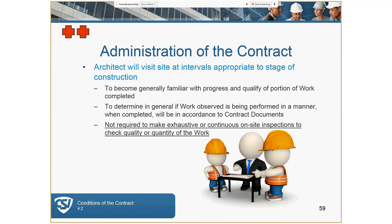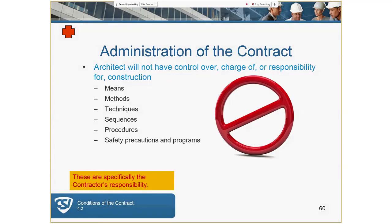During depositions, one common topic is how often the architect visited the site. The architect is not required to make exhaustive or continuous on-site inspections to check the quality or quantity of the work — just needs to be generally familiar with the progress. Architects observe; they don't inspect. The architect will not have control over means, methods, techniques, sequences, et cetera — these are specifically the contractor's responsibilities.